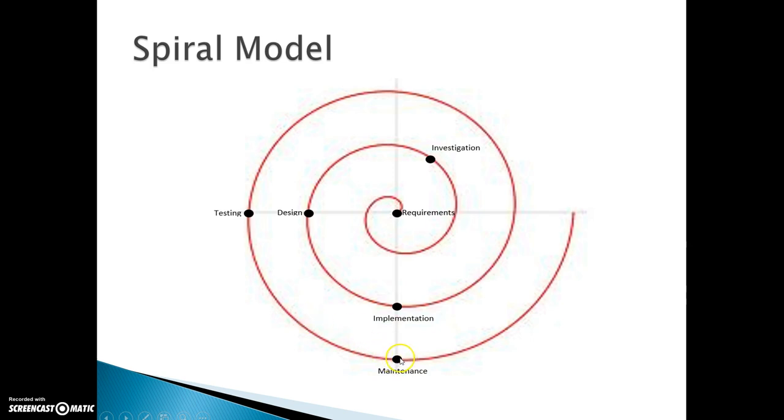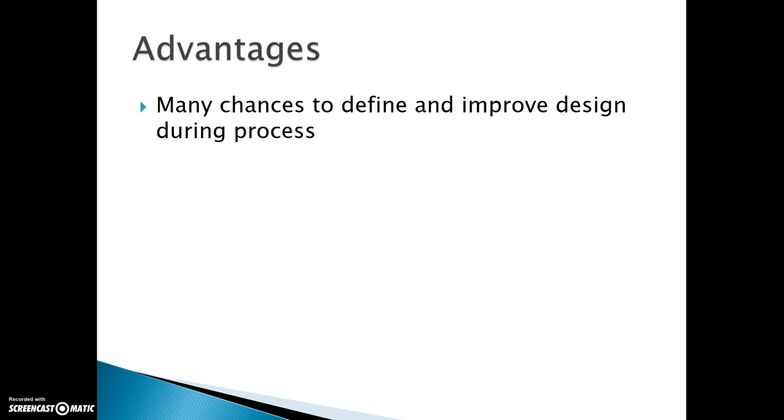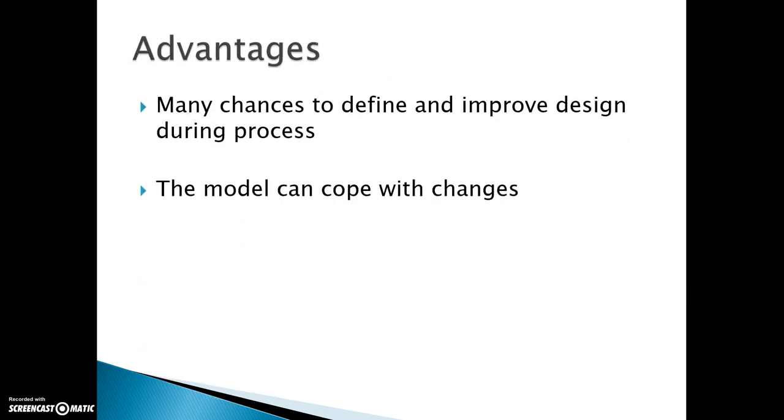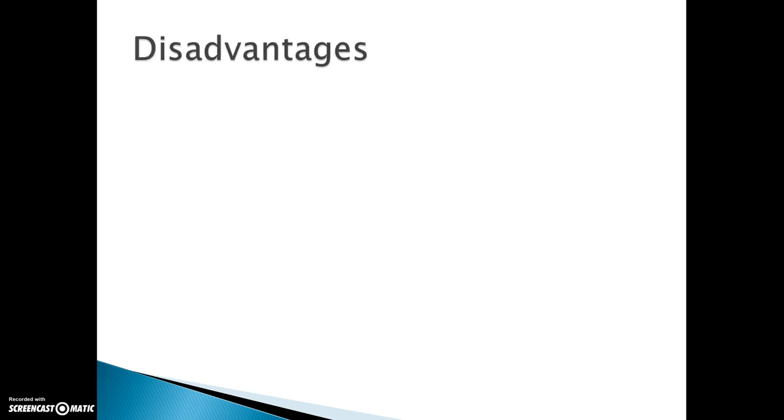And once you get to maintenance, once again, you do the repair, you make the improvements based on your testing. Plus you can actually change your implementation at the same time as well. So a spiral model, you could work at different stages at the same time. Now what is the advantages of this? You've got many chances to improve the design during the process. So once again, like I said, you can go back to stages that you've done or if you've missed out anything, you can go back to it. The model can cope with changes. Any changes you make while you're revisiting previous stages. The model, you can cope with this.